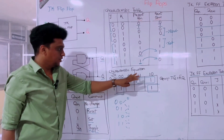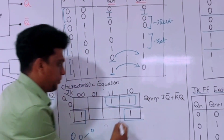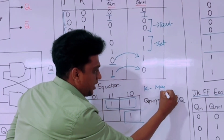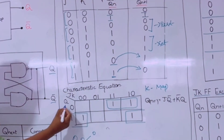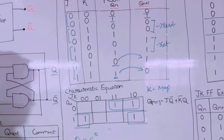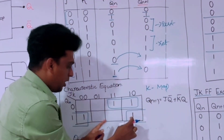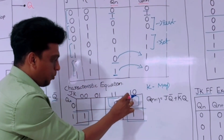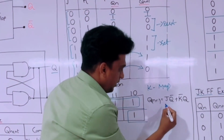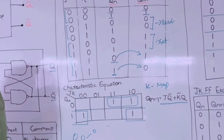With the help of the characteristics equation we draw the K-map. Using present state Q and inputs J and K, we plot the K-map and group cells. Group 1 and group 2 are identified, and the simplified equation is found to be: Q(next) = J·Q-bar + K-bar·Q.